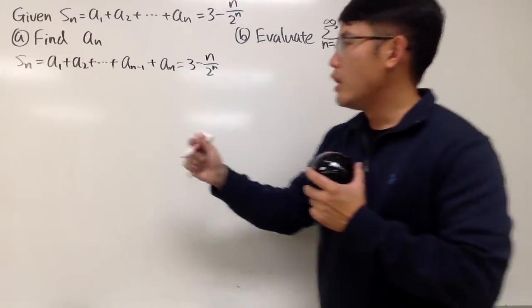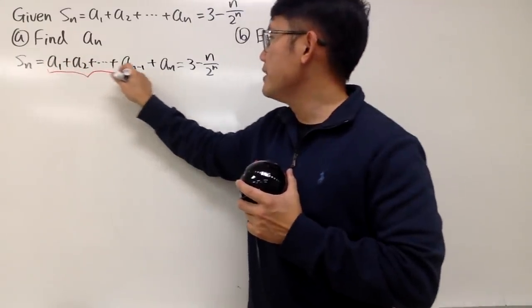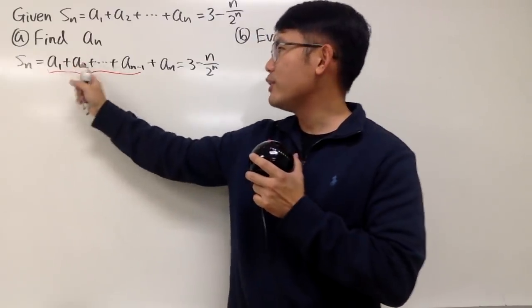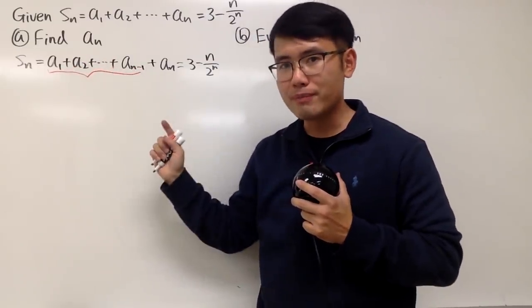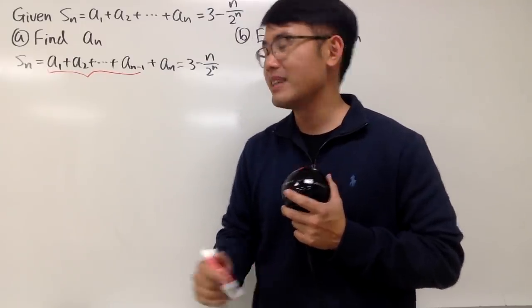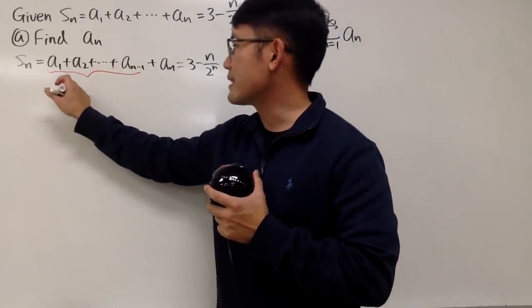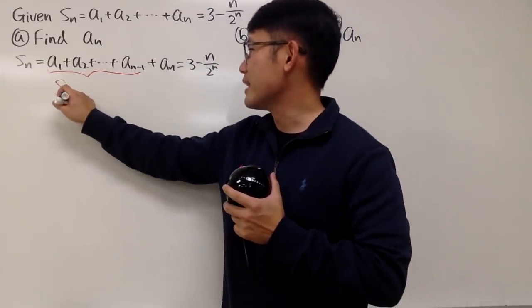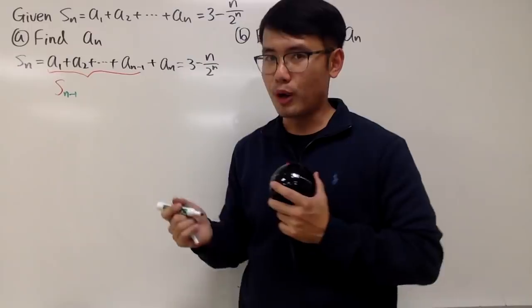From here to here, this is the part that we don't want. But if we add up $a_1 + a_2 + \cdots + a_{n-1}$, that's just the $n-1$'s partial sum, isn't it? So this right here is, in fact, $S_{n-1}$. Because, again, this is just the $n-1$'s partial sum.